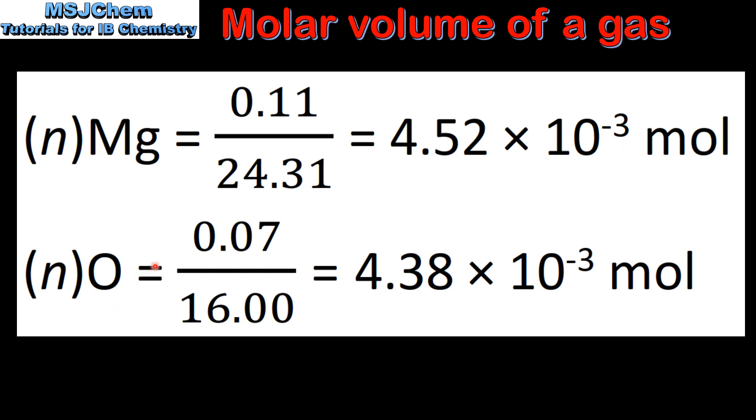For oxygen, we divide the mass of oxygen by the molar mass of oxygen, which is 16.00 grams per mole. This gives us 4.38 × 10⁻³ moles.